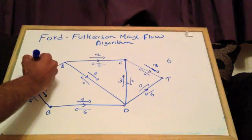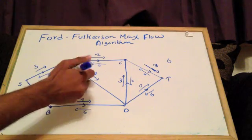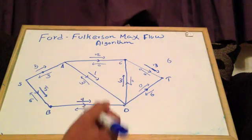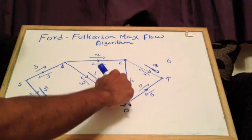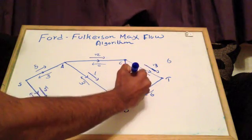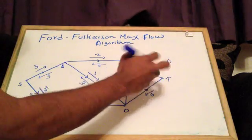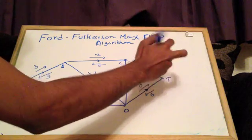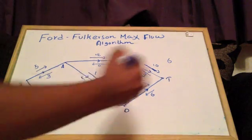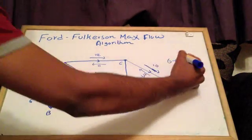So we send 3 along that path. We subtract 3 from the remaining capacities accordingly and add 3 to the flow along the network. The total flow is now 6 plus 3.